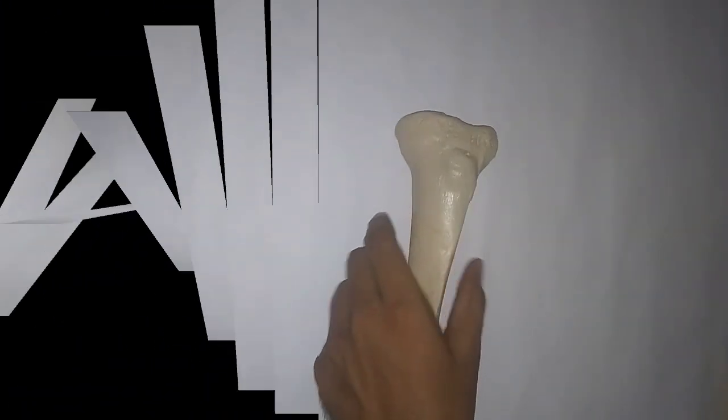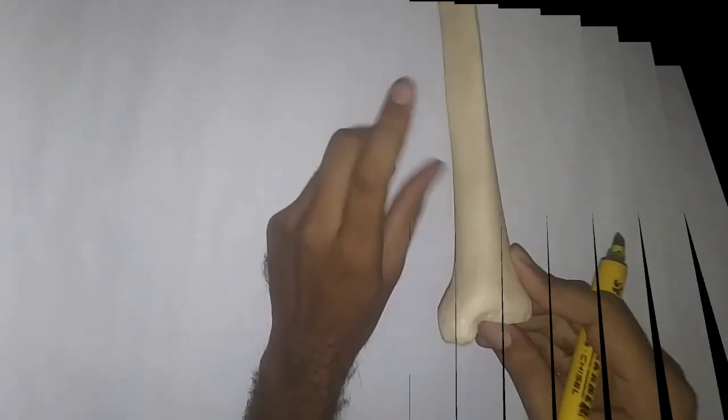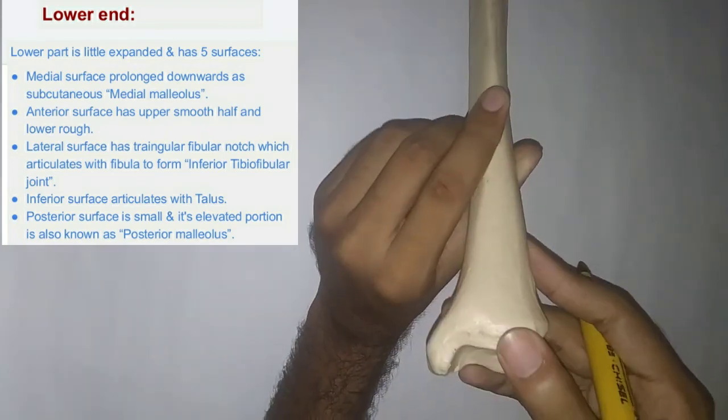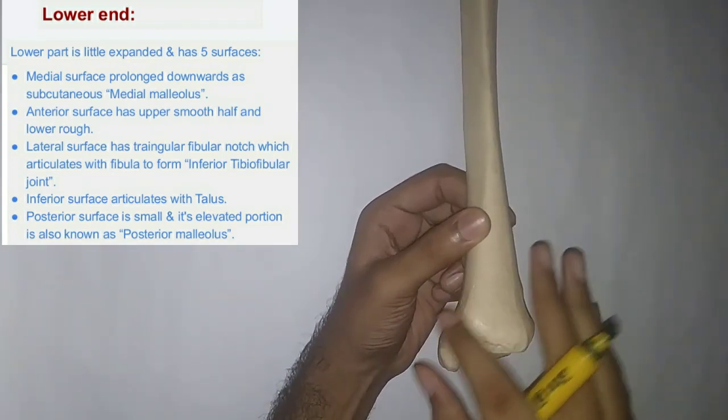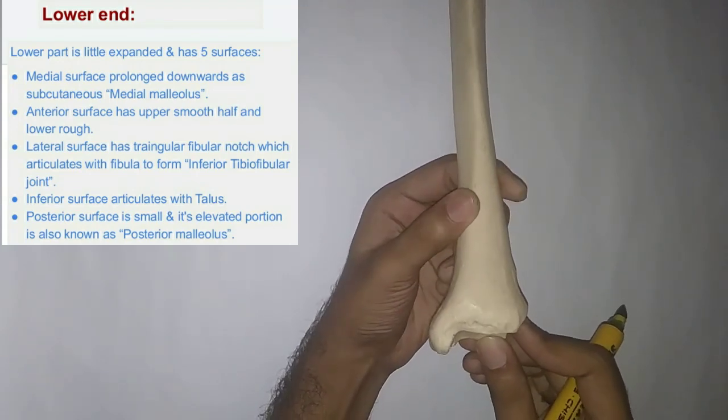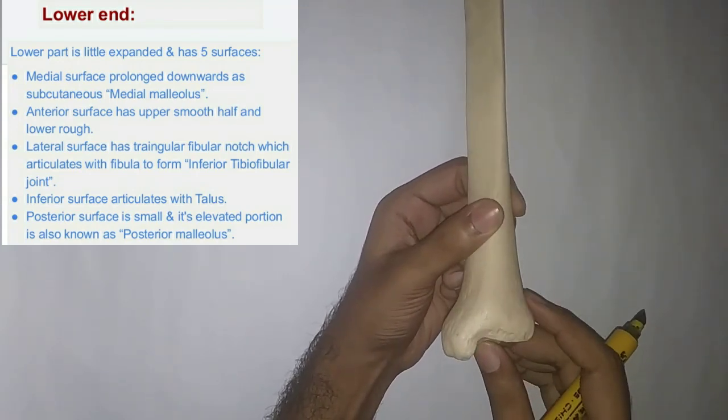Now I'm going to show you how the tibia articulates with the femur — this is how the tibial condyles articulate with the femoral condyles. Now that we are done with the upper end, let's move to the lower end, which is slightly expanded and has five surfaces.